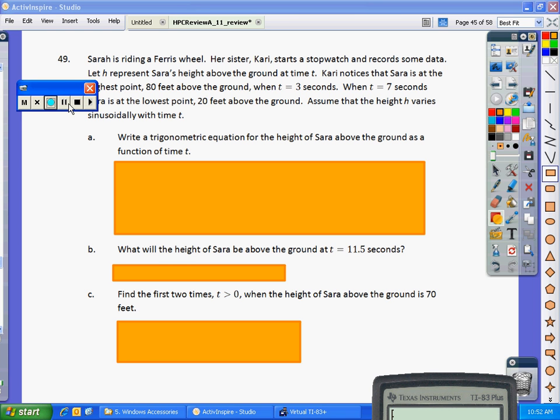Alright, problem 49. Sarah is riding a Ferris wheel. Her sister Carrie starts a stopwatch and records some data. Let H represent Sarah's height above the ground at time T. Carrie notices that Sarah is at the highest point, 80 feet above the ground, when T equals 3 seconds. When T equals 7 seconds, Sarah is at the lowest point, 20 feet above the ground. Assume that the height H varies sinusoidally with time T.